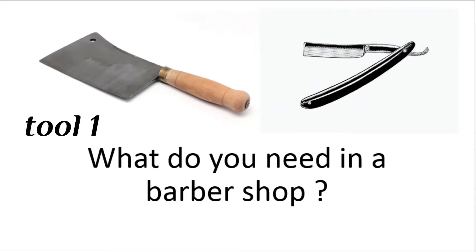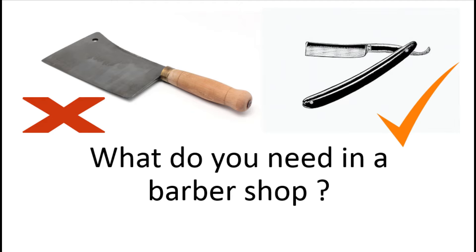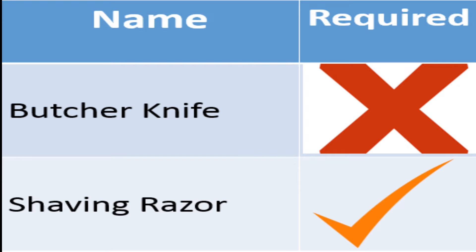That means: do you want this item in your production line or do you not want it? Do you require this item in front of you on the line or don't you? Based on that, we will segregate the items on our workstation. You are supposed to make a list of whatever items you have, and on the right side, put a cross or a tick mark — what is required and what is not required. Once you have completed this list, your 50% of 1S is complete.